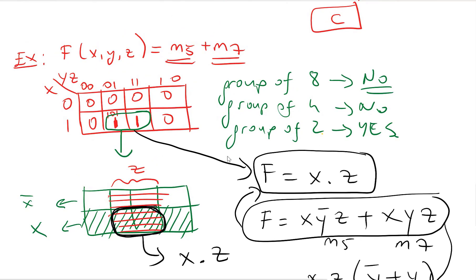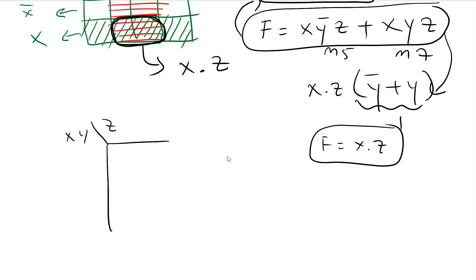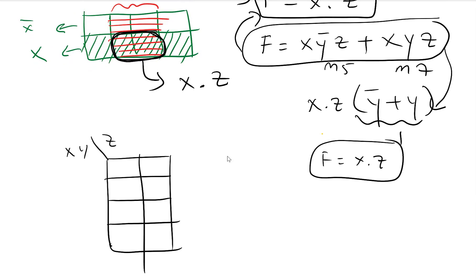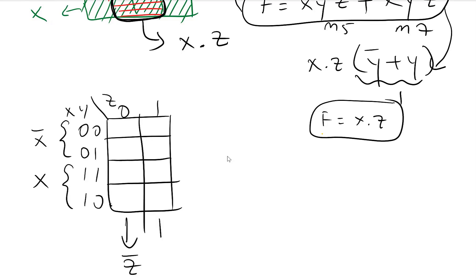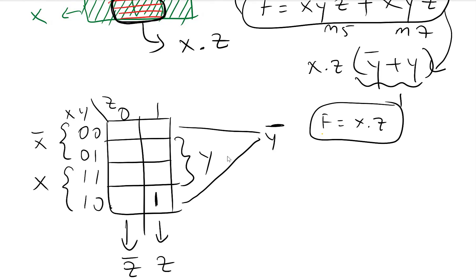We can also draw the K-map in a different orientation — with X and Y on the vertical axis and Z on the horizontal axis, using order 00, 01, 11, 10 for the rows and 0, 1 for the columns. The top two rows are X-not, the bottom two are X; the right column is Z and left is Z-not; the middle two rows are Y and the outer rows are Y-not. Placing m5 (101) and m7 (111) and grouping them still gives f = x·z.